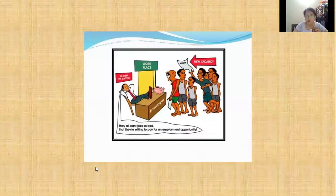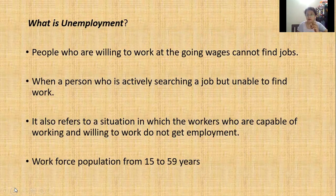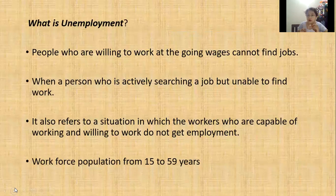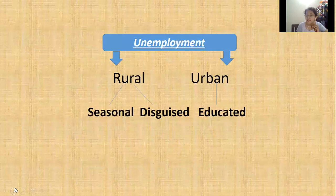You can see here there is one image which is clearly depicting the situation of unemployment. Let us understand what we mean by unemployment first. Unemployment basically is when a person who is willing to work — keep these words in mind, willing to work — but cannot find a suitable job. The workforce population is 15 to 59 years of age. Why 59? Because 60 years is the retirement age. We have different types of unemployment: rural and urban — seasonal and disguised in rural, and educated in urban.